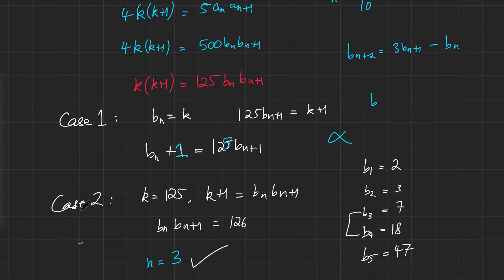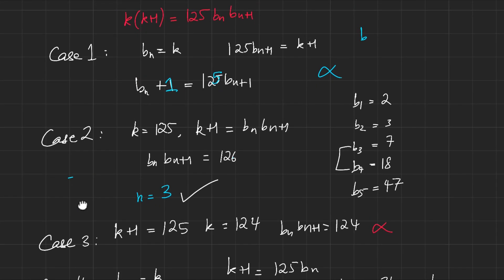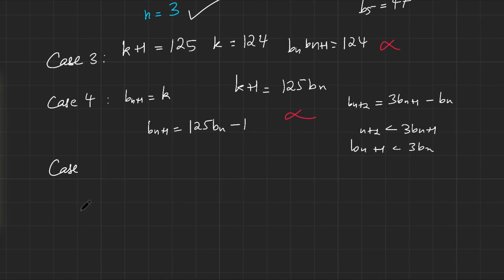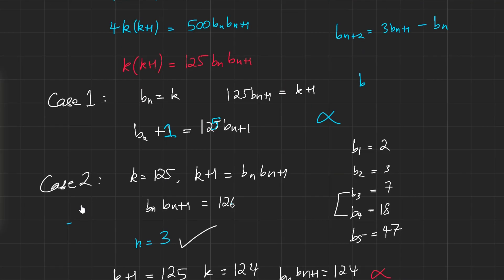What else could be a case? Let's just see whether we've actually exhausted all possibilities. We've matched k with 125. We've matched k with 125bₙ, I think. Have we done that? Have we matched k with 125bₙ? Oh, we haven't. I guess that would be case 5. Case 5 would be k is 125bₙ and k+1 is bₙ₊₁. Or rather, 125bₙ plus 1 equals bₙ₊₁. Again, using the fact that bₙ₊₁ is less than 3bₙ because obviously you're always minusing some quantity, this case has no solution as well. We've checked 5 cases just to make sure. That's it. That's also been done. I think we've done all the cases.